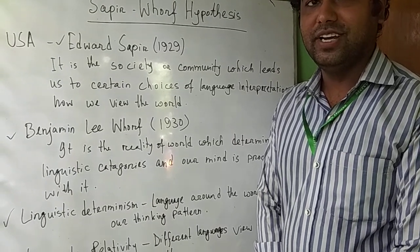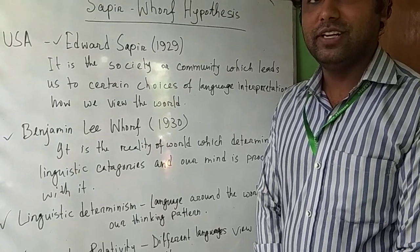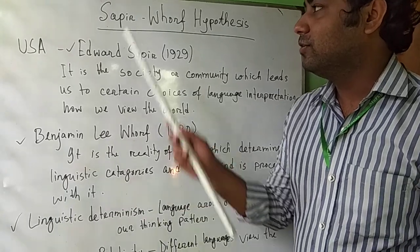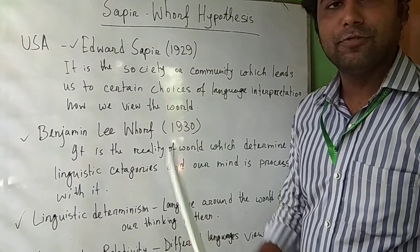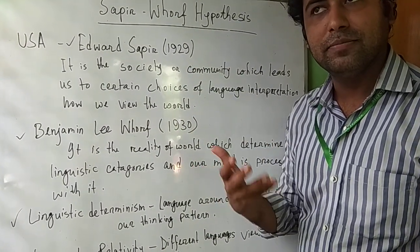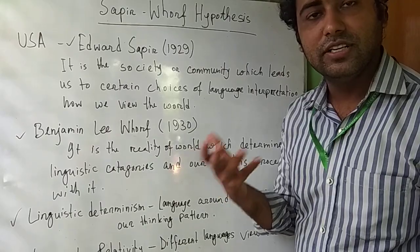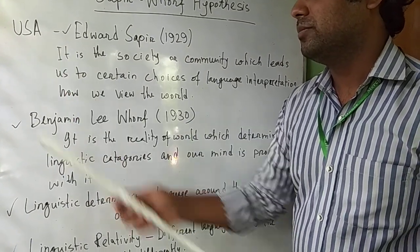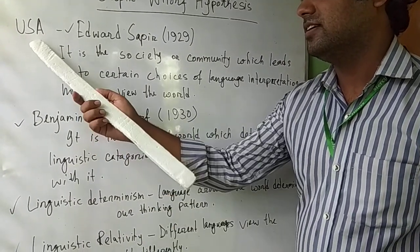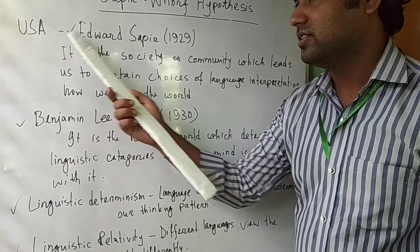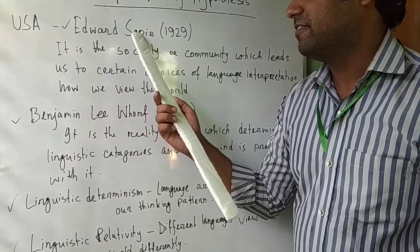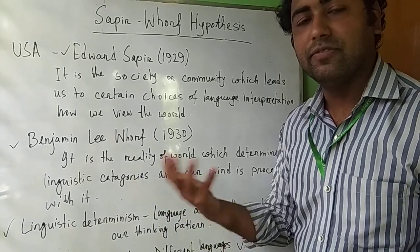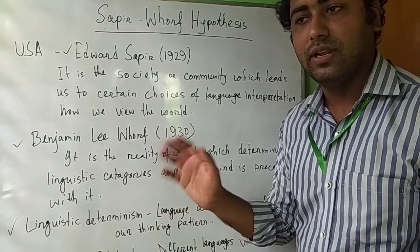Good morning everyone, today I welcome you all to the second part of our conversation. The Sapir-Whorf hypothesis from linguistics is based on sociolinguistics theory. Here you can see from the USA, two modern linguists — Edward Sapir and Benjamin Lee Whorf — they provided a kind of hypothesis on language.